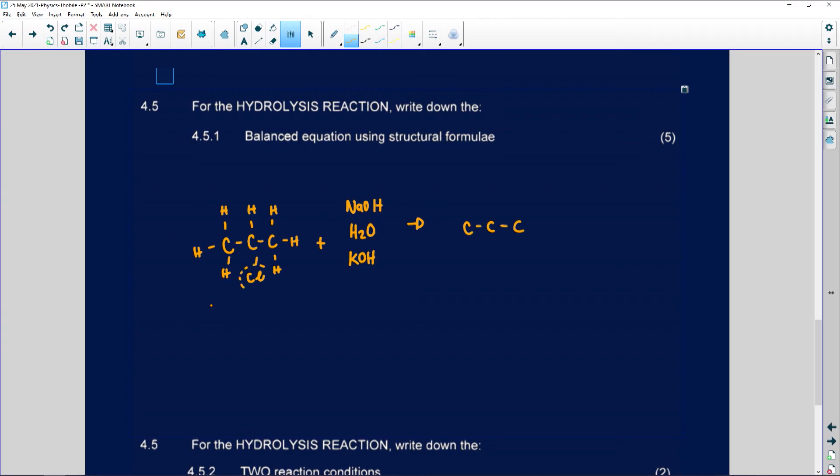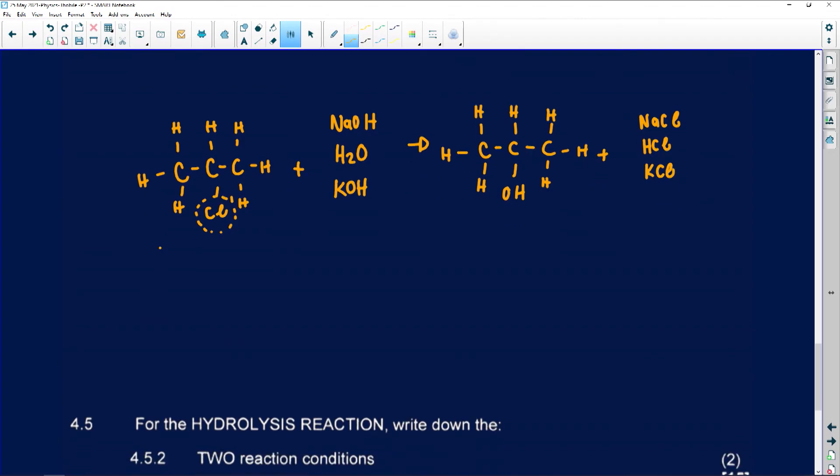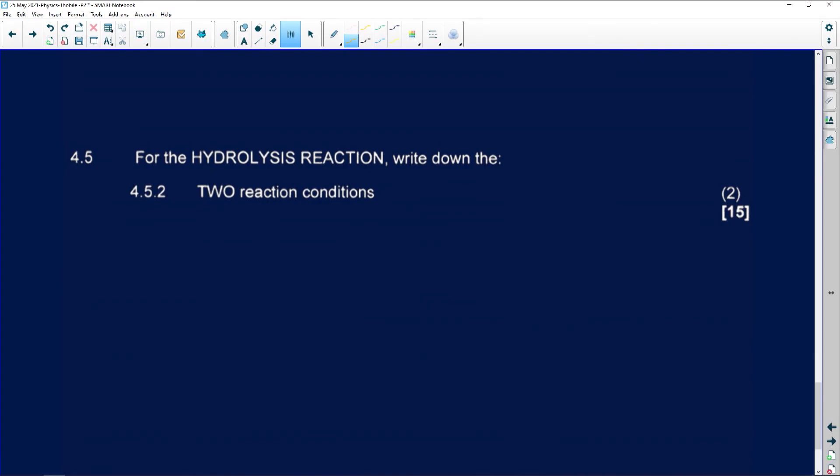So wherever this one is sitting will be replaced by an OH in the same position. That will be an OH and then all the other hydrogens around the molecule then remains at the same place. The sub-product of this one here will be represented by whichever one you chose here. So I could have had NaCl if I chose NaOH, I would have had HCl if I chose water, or potassium chloride if I chose KOH. And this is my molecular formula.